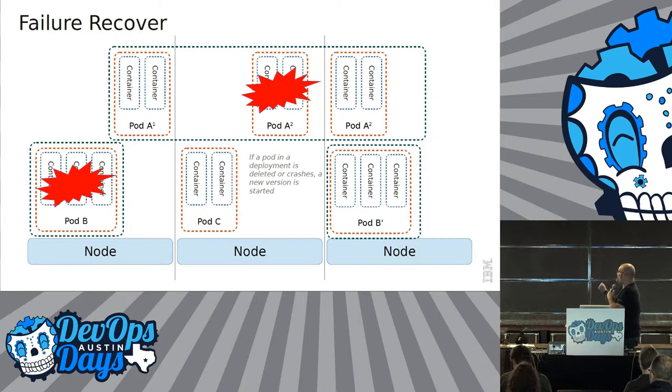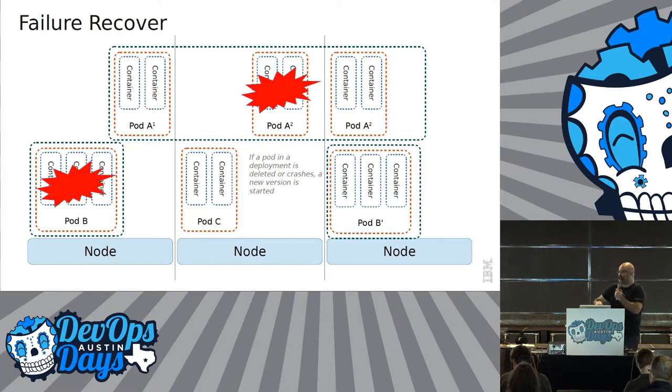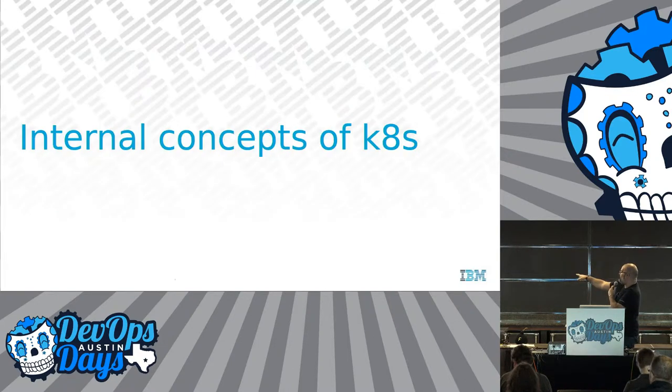If something blows up, almost instantaneously, Kubernetes will try to spin it up somewhere else. If you look at pod A2 — it needed a replica set of two — so it immediately found another node that could run it. If pod B blew up, it moves over there.